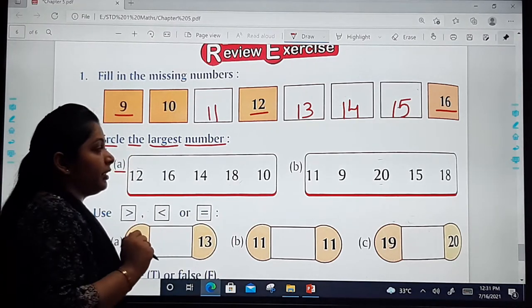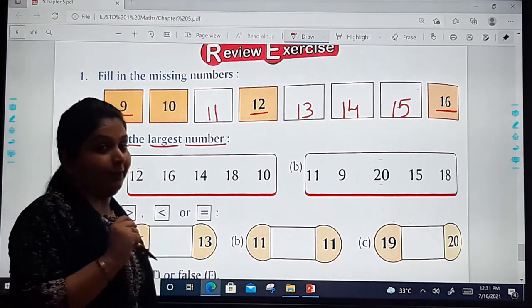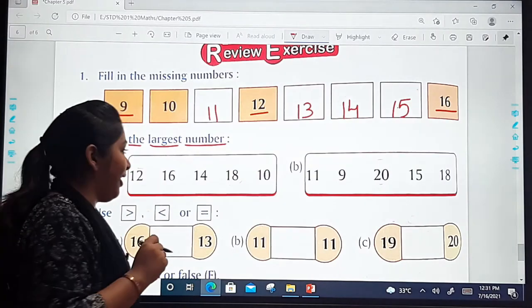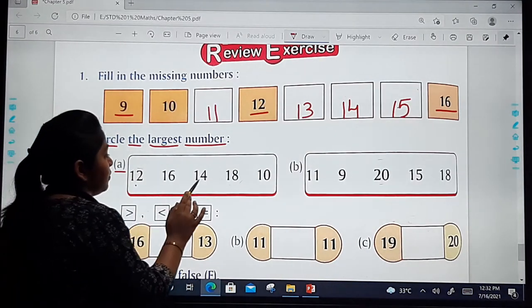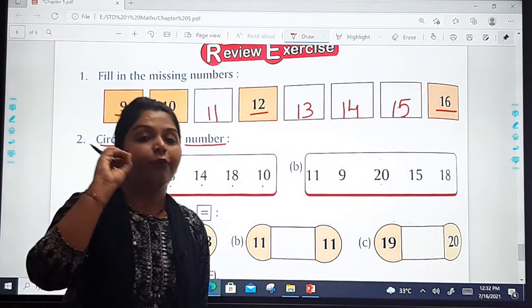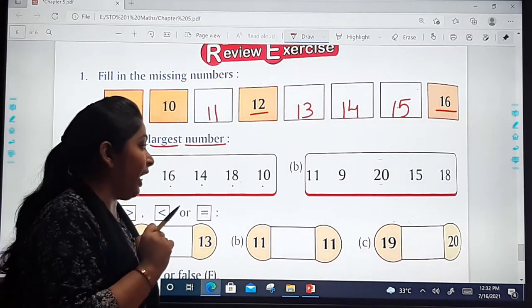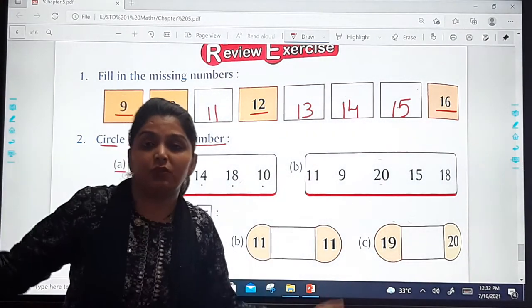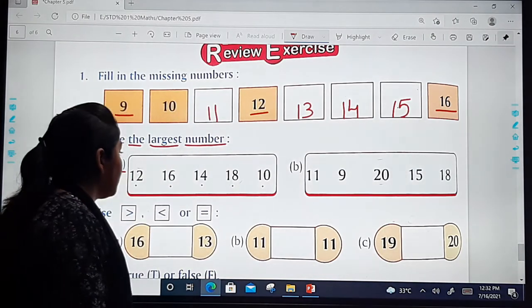Now see, dear kids, in the first one, four numbers are given to you. How many numbers are there? 5 numbers. So we have to circle the largest one, sabse bada wala. Okay?